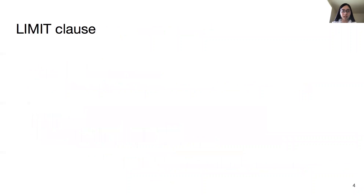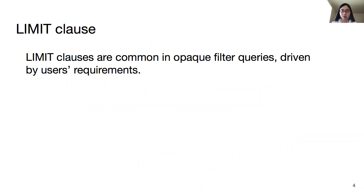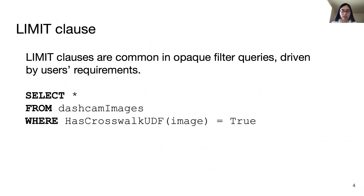One thing to notice is that limit clauses are common in opaque filter queries, driven by user requirements. Take the query of selecting images containing crosswalk as an example. The user may be a self-driving car engineer who only needs 100 examples to debug the car, so she would add the limit clause for downstream processing.